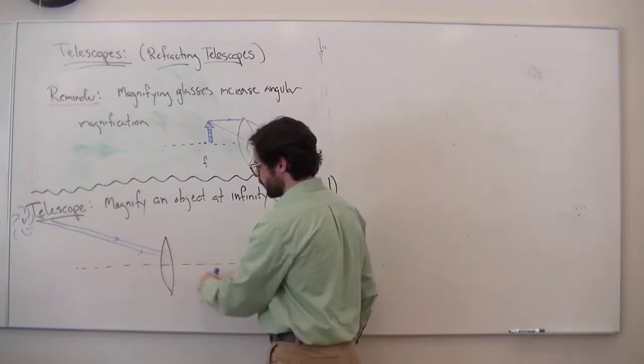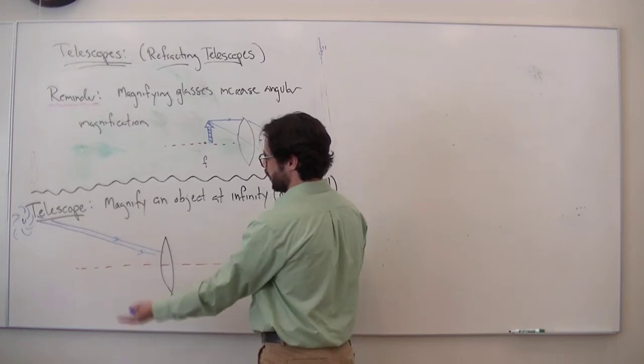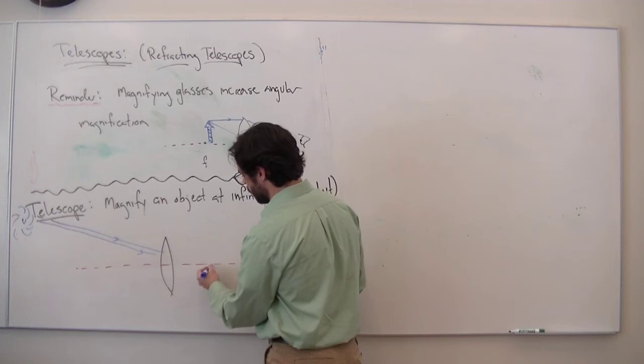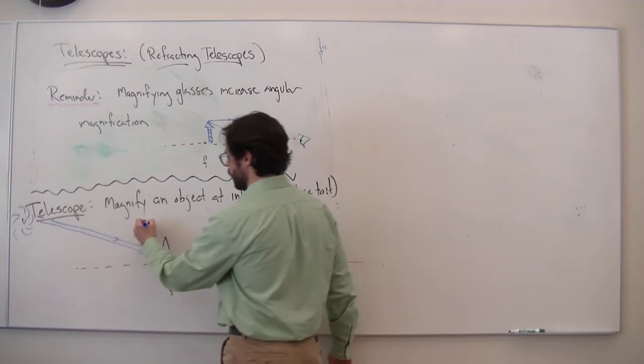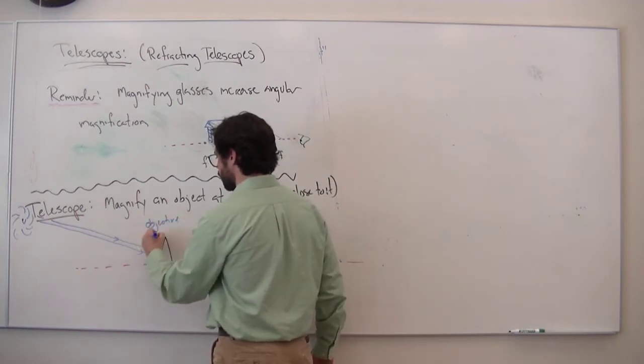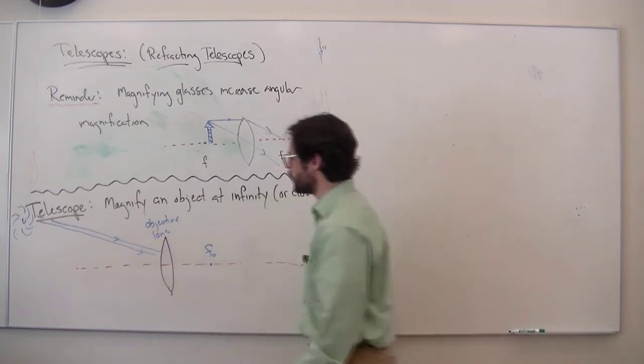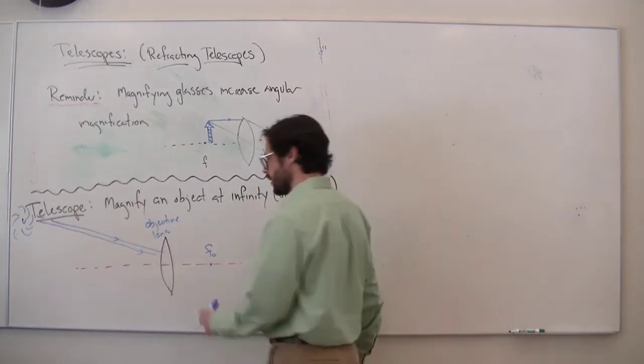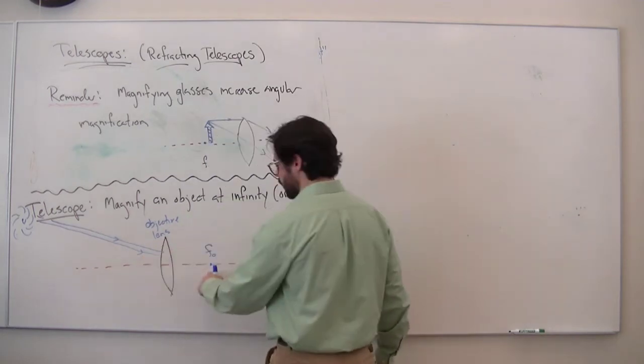So these things are actually going to converge at the focus. And I'm going to tilt it up so that there is a thing that looks like an image. So here's the focal length. And I'll call it O because what this is known as is the objective lens. And the objective lens, in some sense, is the one that's kind of doing all the work. It's really big. It's collecting a lot of light. So these things are going to converge at the focus.